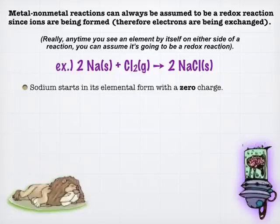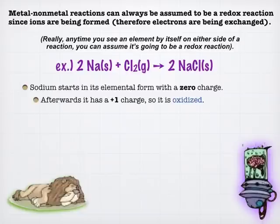And so since sodium's starting in elemental form, it starts with a zero charge. It's in elemental form. Same with chlorine. But afterwards, in the compound sodium chloride, we all know that sodium gets a plus one charge. And so since it went from a zero to a plus one, you get a plus one charge by losing an electron. So sodium's being oxidized.